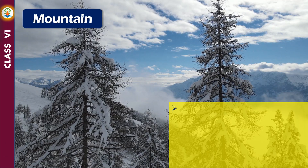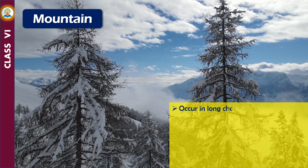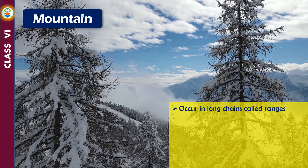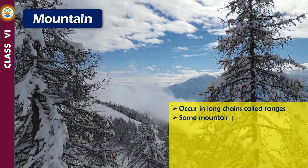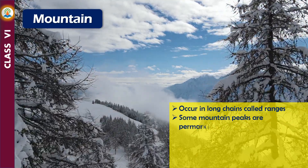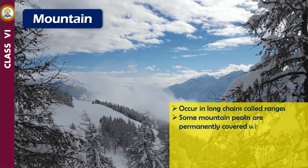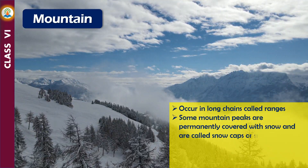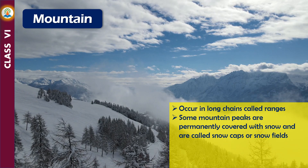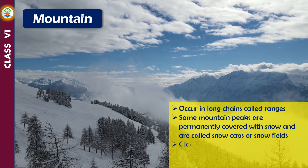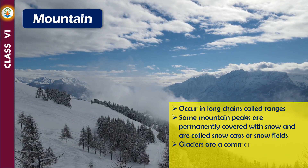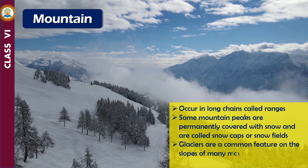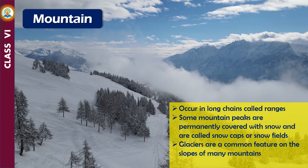Mountains occur in long chains called ranges. Some mountain peaks are permanently covered with snow and are called snow caps or snowfields. Glaciers are a common feature on the slopes of many mountains, and glaciers give rise to perennial rivers.